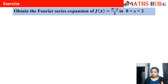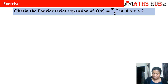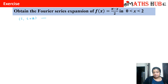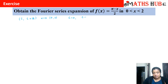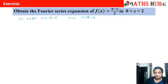Whatever interval you get, you can do that exercise using the basic formulas — the basic formulas are not going to change. For any Fourier series expansion we need to compare the interval with c to c + 2l. In this case the interval given is 0 to 2, so on comparing we get c = 0 and c + 2l = 2, which gives us l = 1.